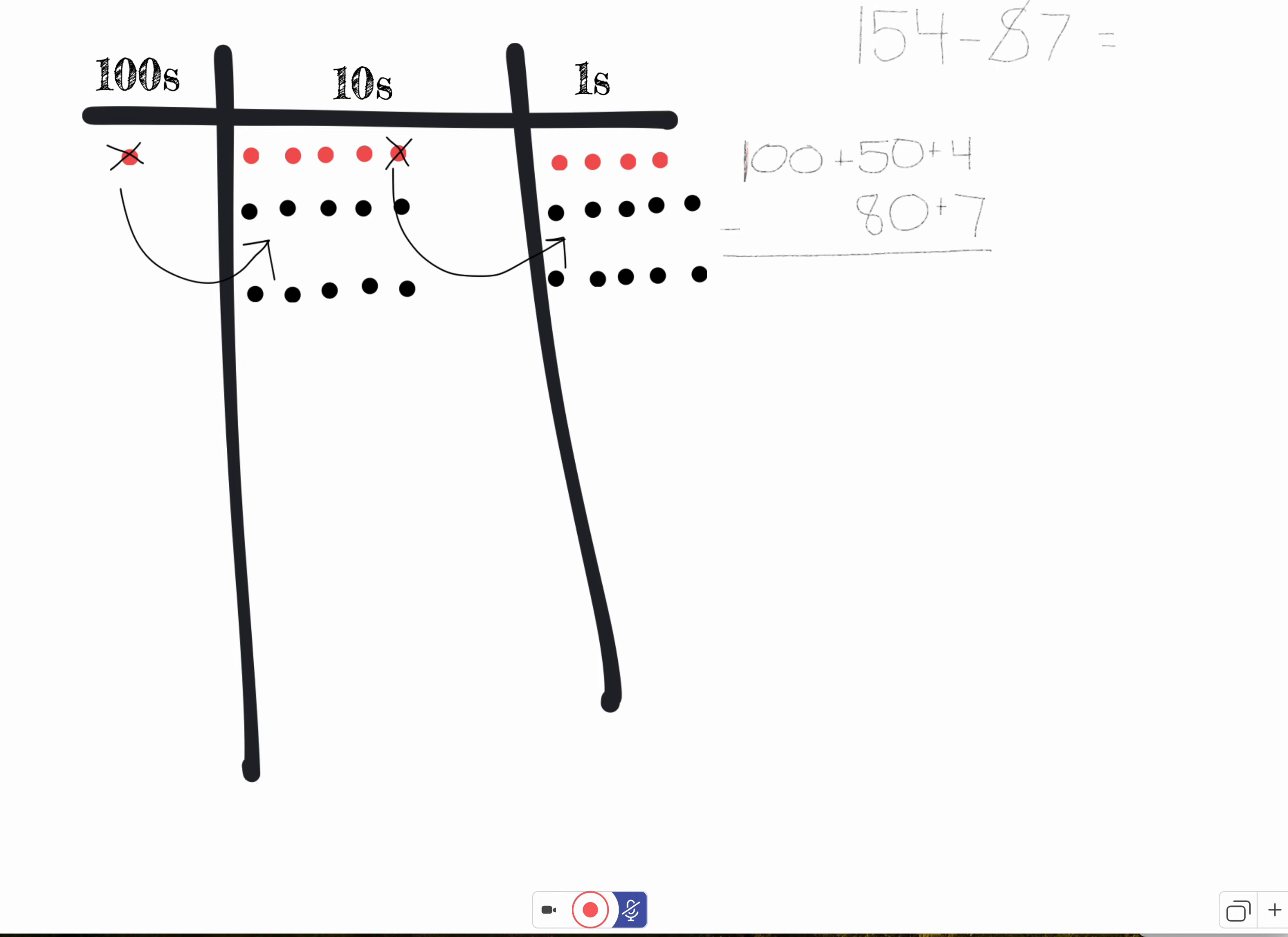So now I'm ready to separate. So let me show you what we did here. We exchanged 1 ten, we moved 1 ten here, so now we have 14 ones. And then we exchanged 1 hundred. Now we don't have any hundreds, and we have 14 tens. Okay, so now I can separate or subtract. Let's go.